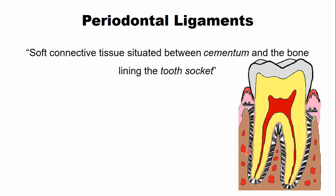There are some periodontal ligaments that originate from cementum and they insert into the adjacent tooth, while some of the periodontal ligaments originate from the alveolar bone and they also insert into the gingiva. We will discuss the details of these groups of periodontal ligaments in our upcoming lectures.